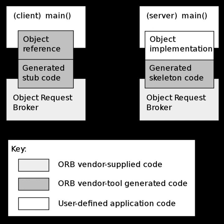The servant for each object can be chosen either statically or dynamically for each remote invocation, in both cases allowing call forwarding to another server. On the server side, the POAs form a tree-like structure, where each POA is responsible for one or more objects being served. The branches of this tree can be independently activated, deactivated, and have different code for servant location or activation and different request handling policies.